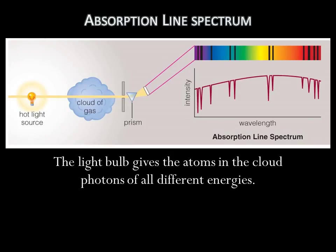Now, let's put a cloud of gas in between the light and the prism. For the sake of simplicity, let's assume the cloud is composed only of hydrogen. As before, the light bulb gives the atoms in the cloud photons of all different energies. You may recall from the last lecture what happens when you give an atom energy in the form of light.